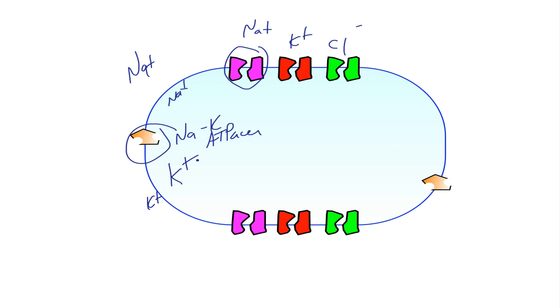Now, in excitable cells such as neurons, at rest, the membrane is largely permeable to potassium but not sodium or other ions. So even though other ion channels are in the membrane, they're closed, and most ions can't pass. But potassium can, even at rest. And for that reason, the membrane potential of a neuron approximates the equilibrium potential of potassium, which is about negative 70 millivolts.